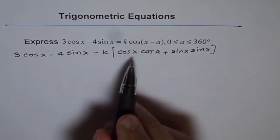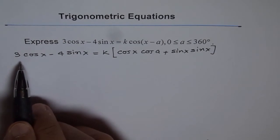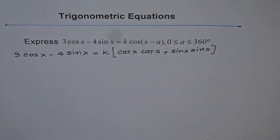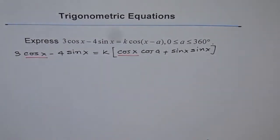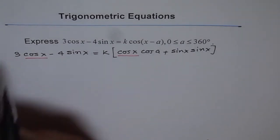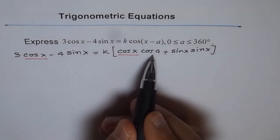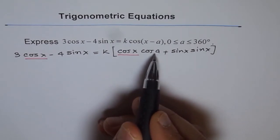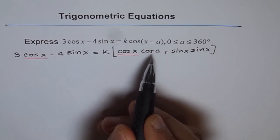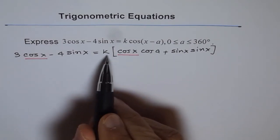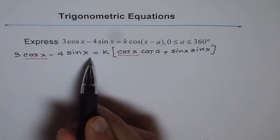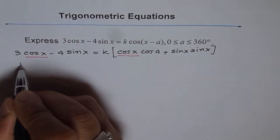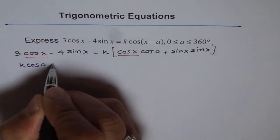Now if you compare these two equations, you can see the coefficient of cos x here is 3, and on the right side it is k times cos a. Since a is a specific number, it is a constant. Therefore, k times cos a equals 3 if these two expressions are equal.